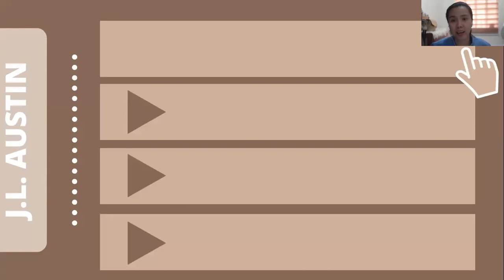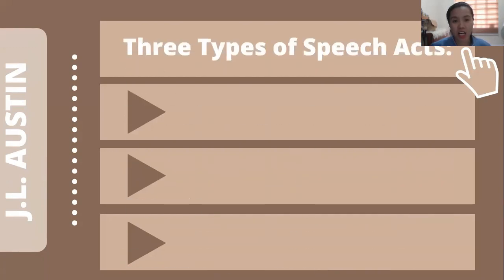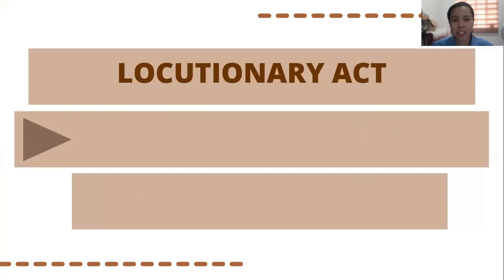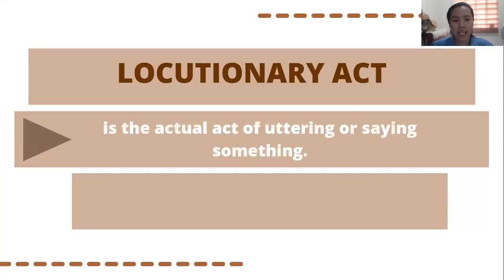According to J.L. Austin, a language philosopher and the developer of speech act theory, there are three types of acts given the right circumstances or context. And these are illocutionary act, locutionary act, and perlocutionary act. First is locutionary act. It is the actual act of uttering or saying something. This act happens with the utterances of a sound, a word, or even a phrase as a natural unit of speech.